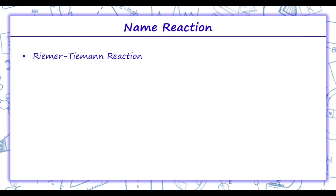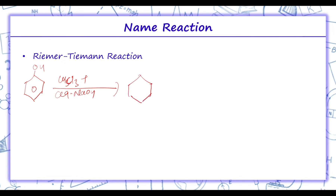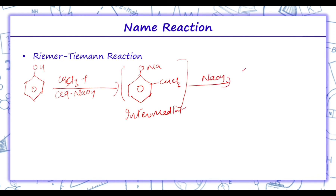Next is the Reimer-Tiemann reaction. In this reaction, phenol is treated with chloroform in the presence of sodium hydroxide. An intermediate is formed — here ONa and CHCl2 are formed. This intermediate on reaction again with NaOH forms the next intermediate.